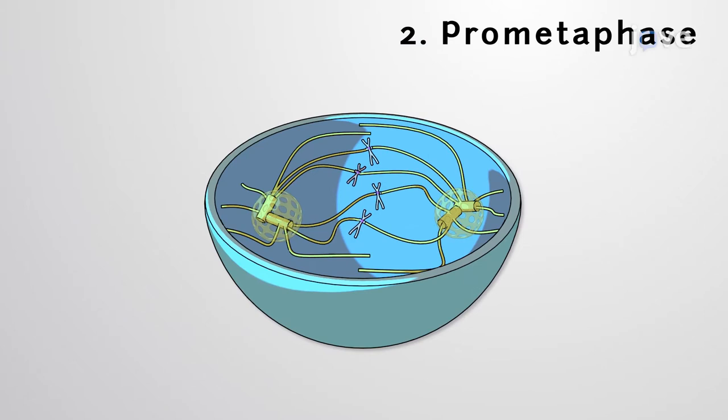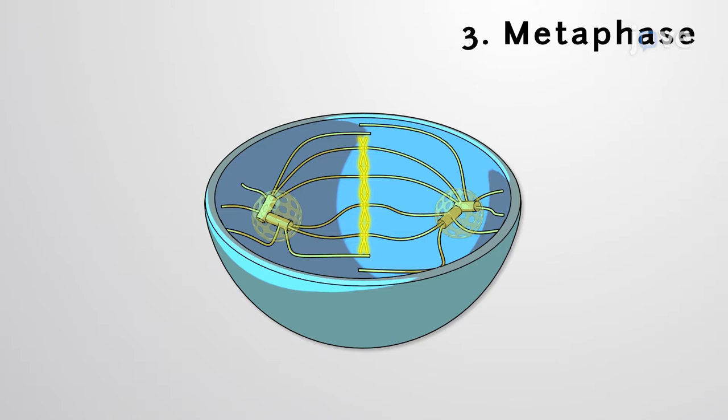Mitosis then progresses to metaphase, where the spindle apparatus rearranges the chromosomes so that they are similarly oriented in a fixed row along the cell's equator.